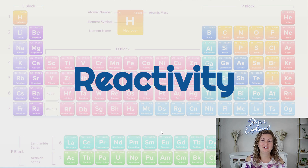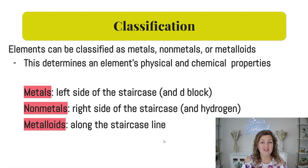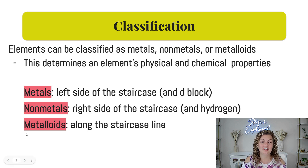Hey everybody, Mrs. Bodishan here. Today we're going to be talking about reactivity of elements on the periodic table, but first we need to understand how they're classified. We can organize them based off of their physical and chemical properties into these areas: metals, non-metals, and metalloids, and you kind of need to know where to find them.